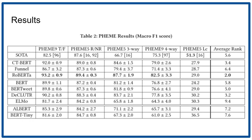The columns correspond to different ways of splitting the PHEME dataset. For example, T/F is taking the true and false labels; R/NR is taking the rumor and non-rumor labels. Then three-way is taking three of the labels, and four-way is taking all four of the labels.